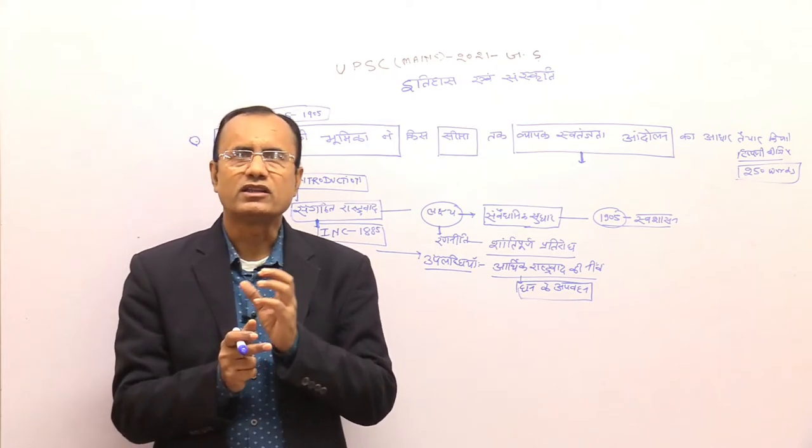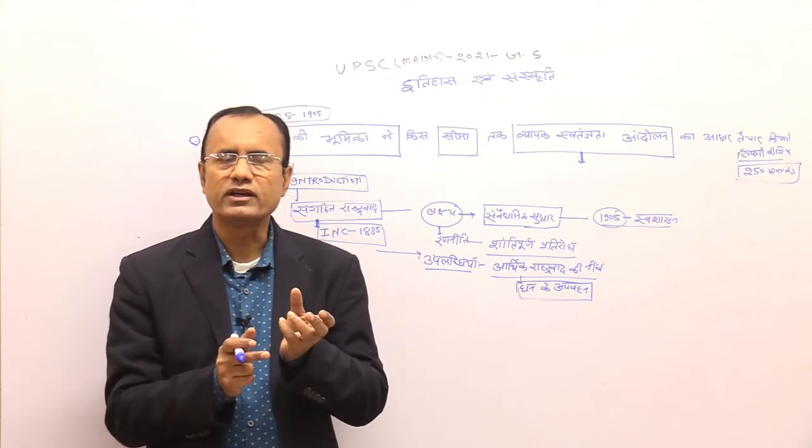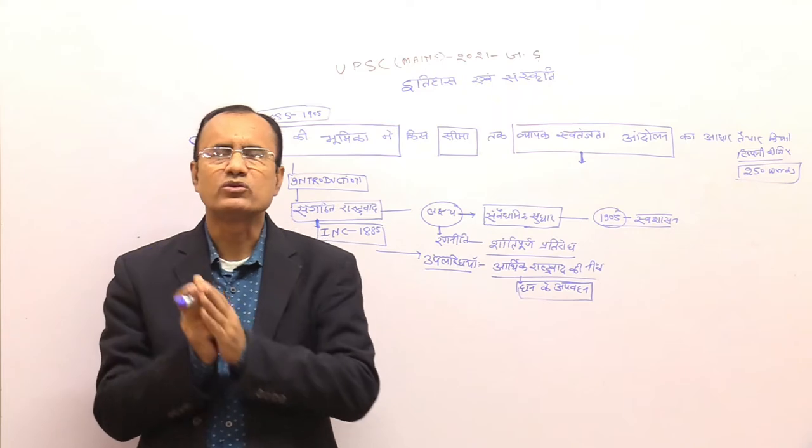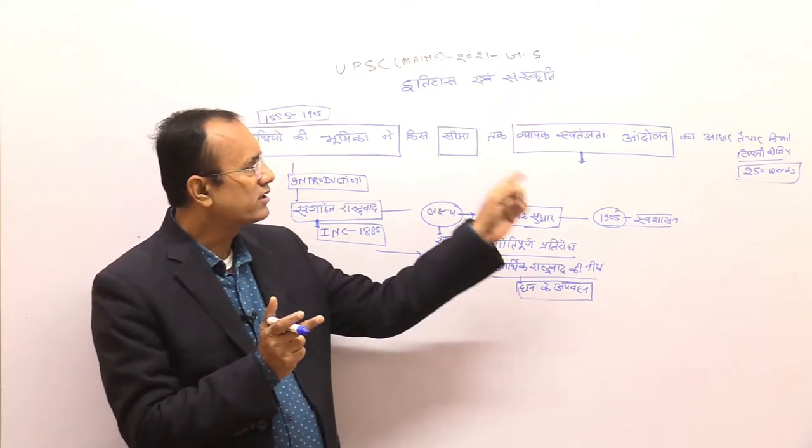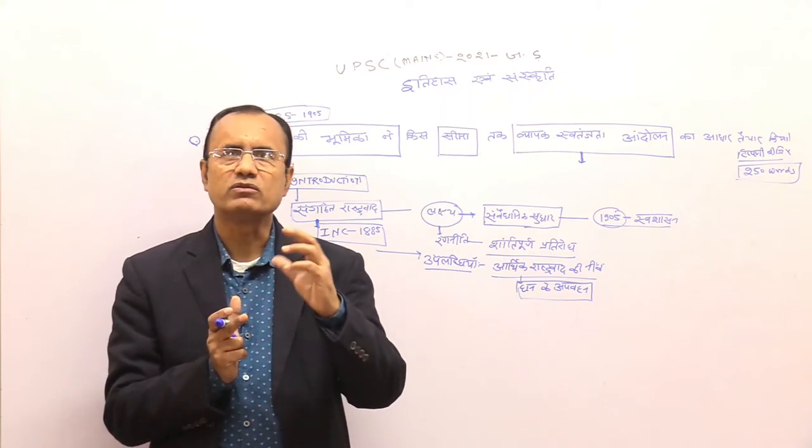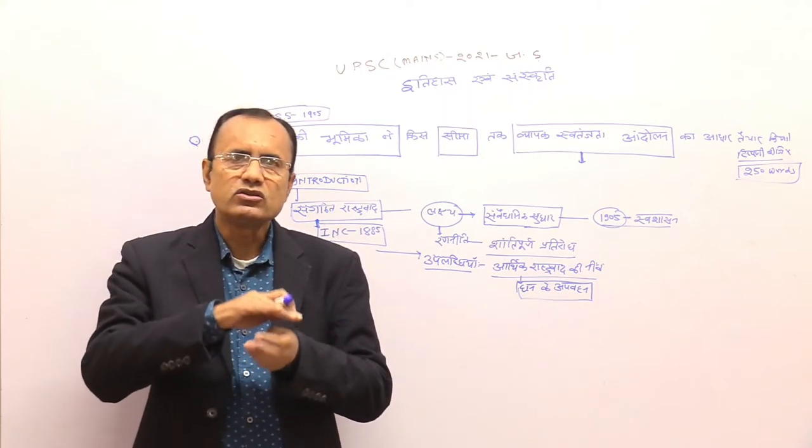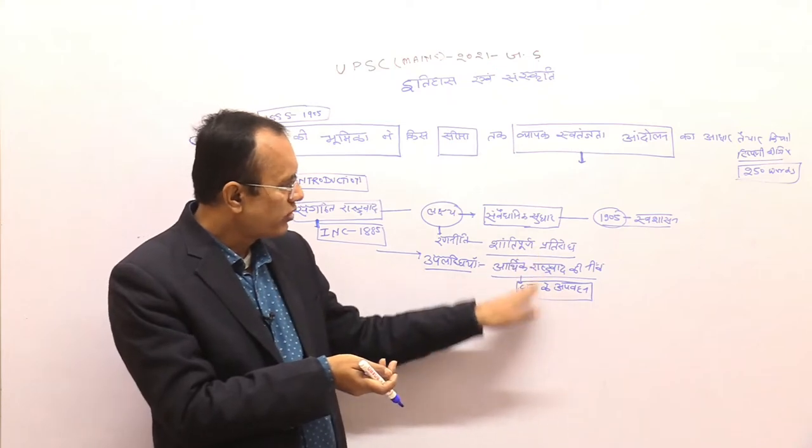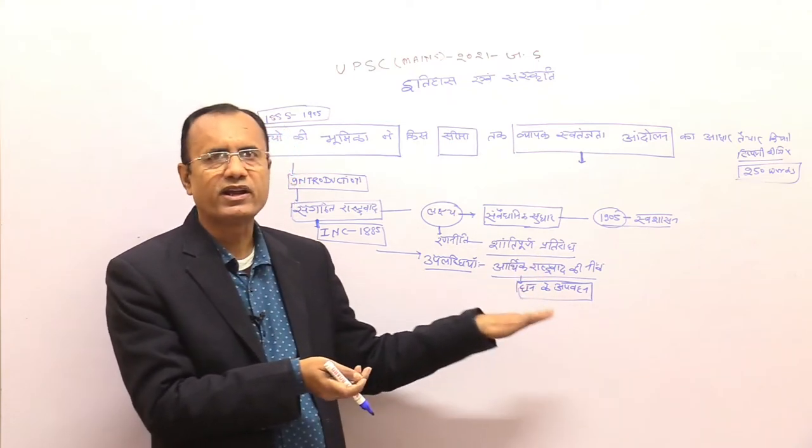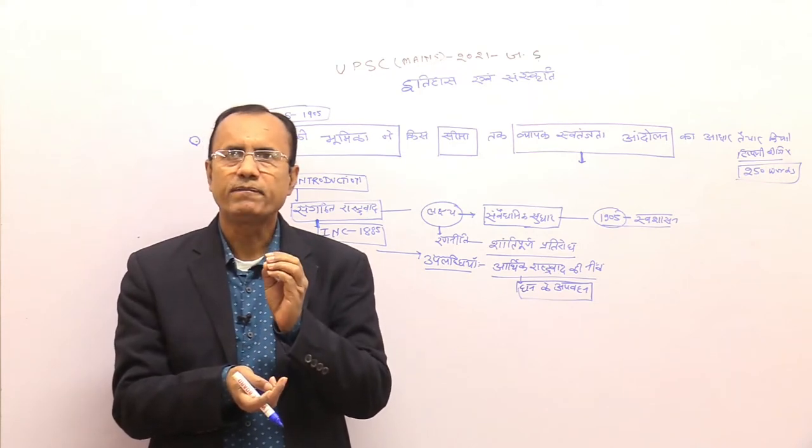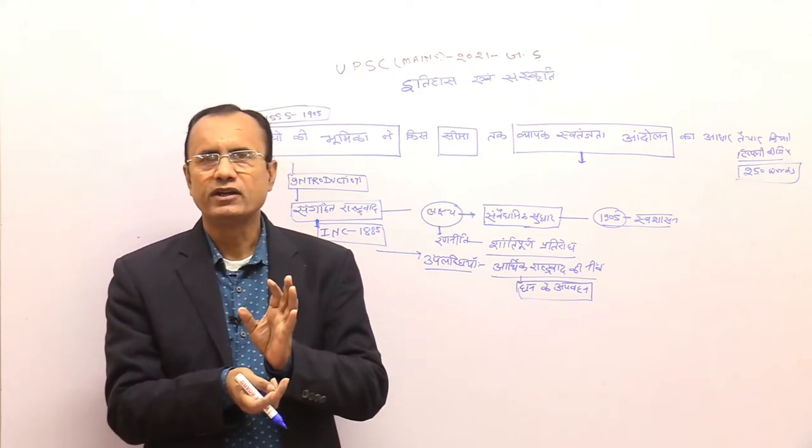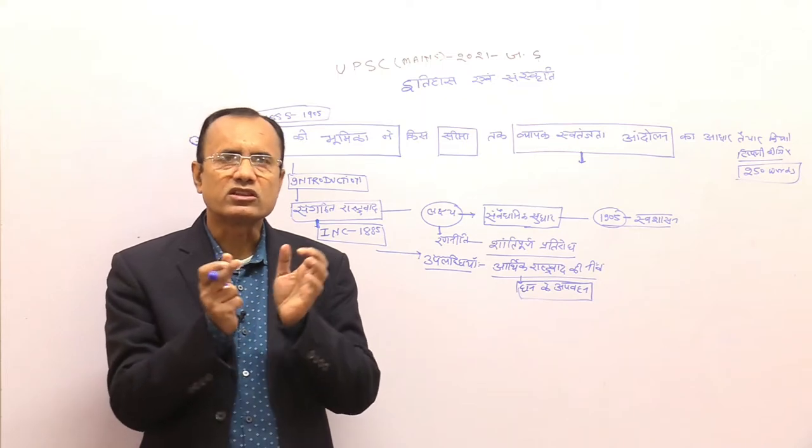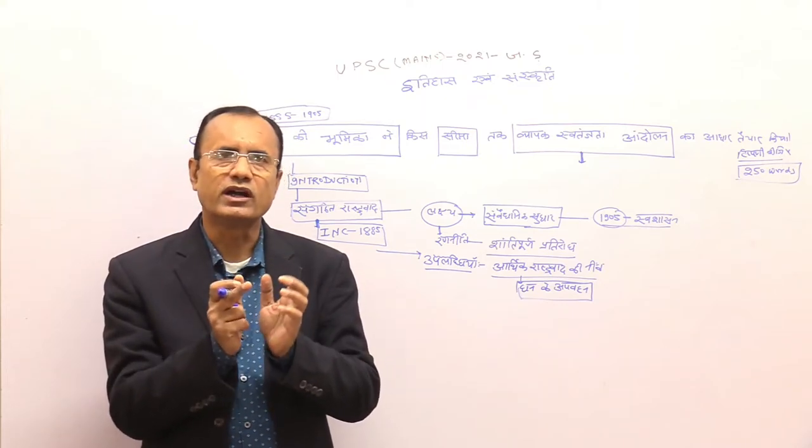इसके विरुद्ध में उग्र राष्ट्रवादी नेताओं ने स्वदेशी um बहिष्कार आंदोलन शुरू किया। उनका स्वदेशी बहिष्कार आंदोलन बहुत व्यापक नहीं हो सका बहुत प्रभाव नहीं डाल सका लेकिन उसी की उपादनति आगे Gandhi में जाती है जब Gandhi भी स्वदेशी और बहिष्कार की बात करते हैं और स्वदेशी और बहिष्कार को बेहतर तरीके से Gandhi लागू करते हैं। इसी लिए जो यहाँ पर आधार यहाँ आप के सामने रखते हैं यह बहुत महत्वपूर्ण है यह इनकी बहुत महत्वपूर्ण उपलब्धि है बहुत महत्वपूर्ण भूमिका है जहाँ इन्होंने उपनिवेश और उपनिवेशिक शक्ता के बीच के संबंध को वैज्ञानिक रूप से उद्घाटित करने का काम किया।